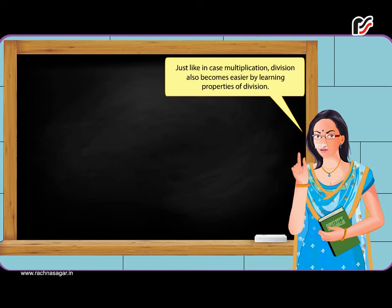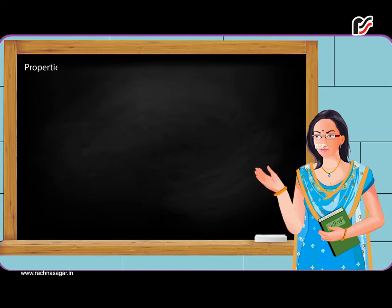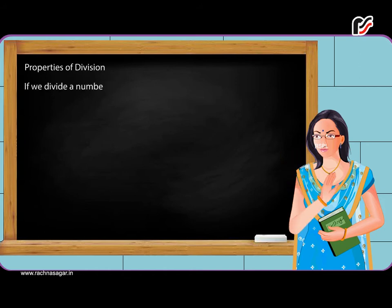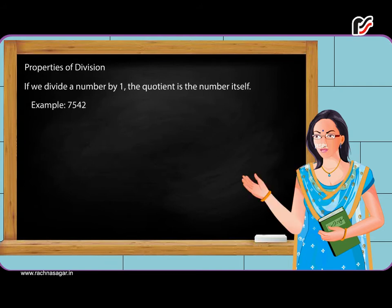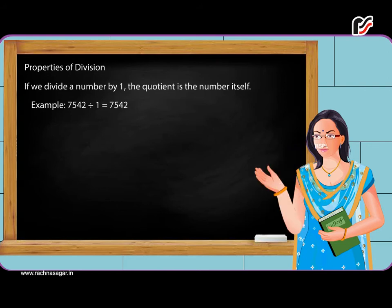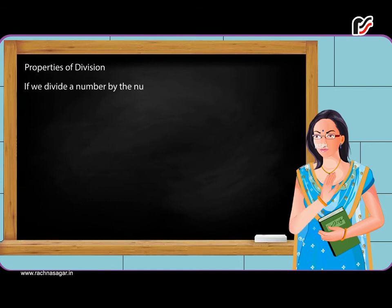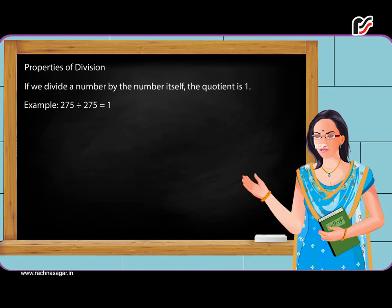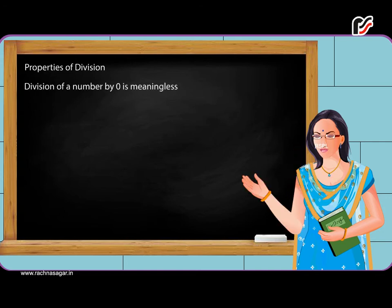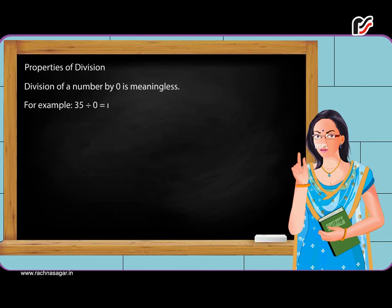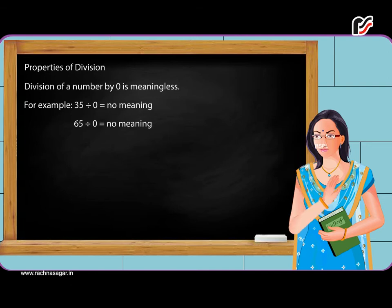Just like multiplication, division also becomes easier by learning its properties. Properties of Division: If we divide a number by 1, the quotient is the number itself. Example: 7,542 divided by 1 is equal to 7,542. If we divide a number by itself, the quotient is 1. Example: 275 divided by 275 is equal to 1. Division of a number by 0 is meaningless. Example: 35 divided by 0 has no meaning.